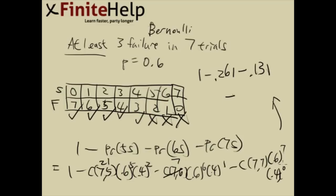And this number, well 7 choose 7 is 1, anything to the zero is 1, so we only have 0.6 to the seventh, which is 0.028.